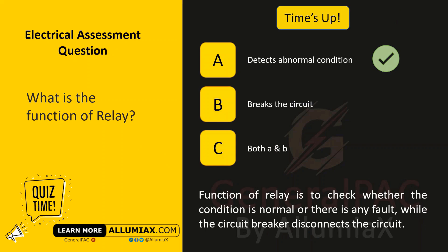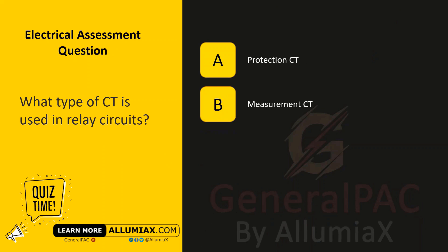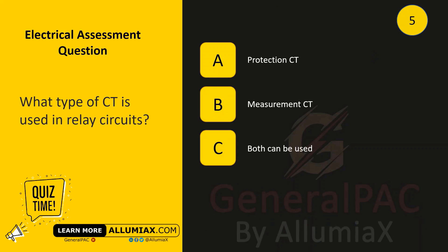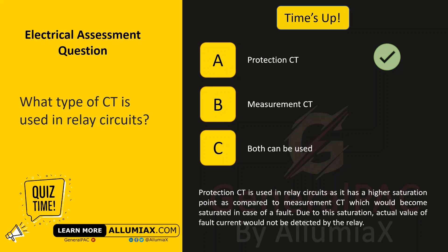Or there is any fault, while the circuit breaker disconnects the circuit. What type of CT is used in relay circuits? A: protection CT, B: measurement CT, C: both can be used. The answer is A — protection CT. Protection CT is used in relay circuits as it has a higher saturation point.